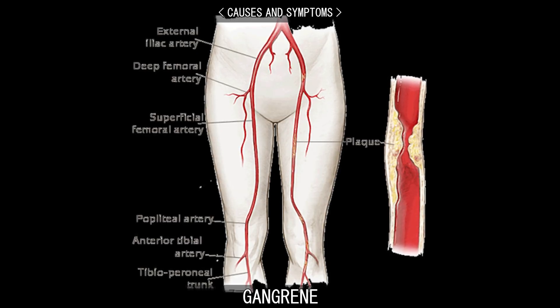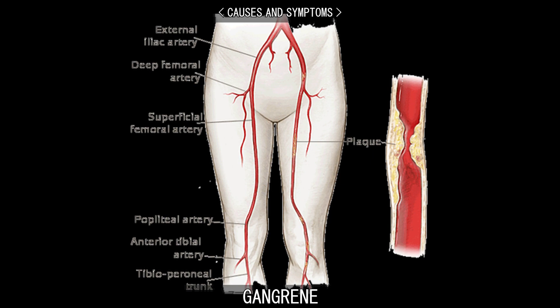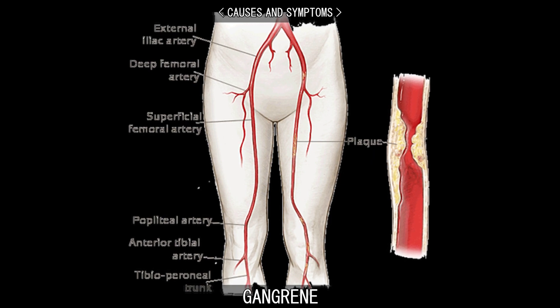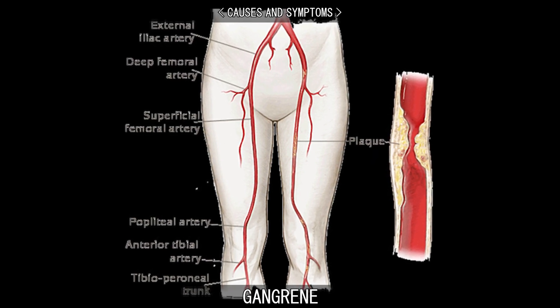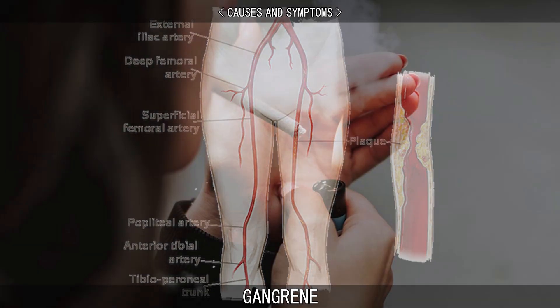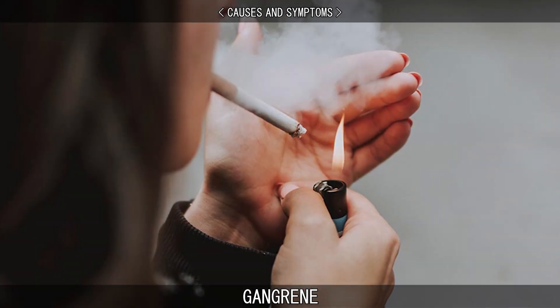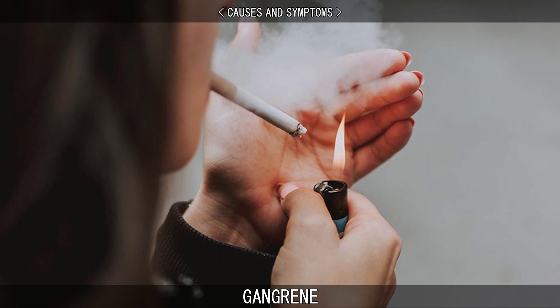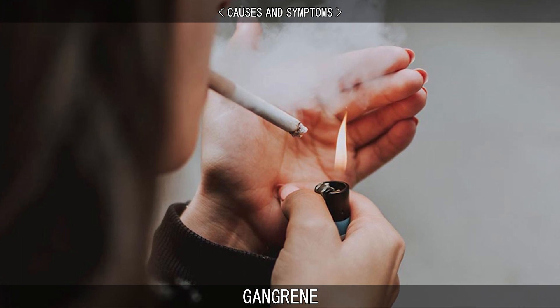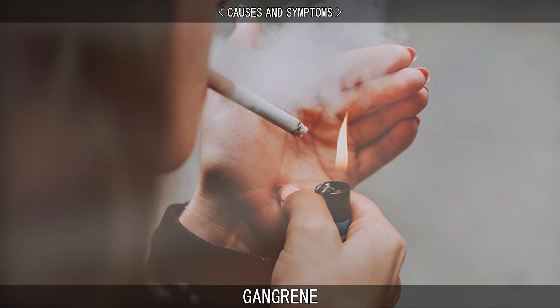Gangrene is caused by a critically insufficient blood supply or infection. It is commonly associated with diabetes and long-term tobacco smoking, and the feet and hands are most often affected. Symptoms may include a change in skin colour to red or black, numbness, pain, skin breakdown, and coolness.